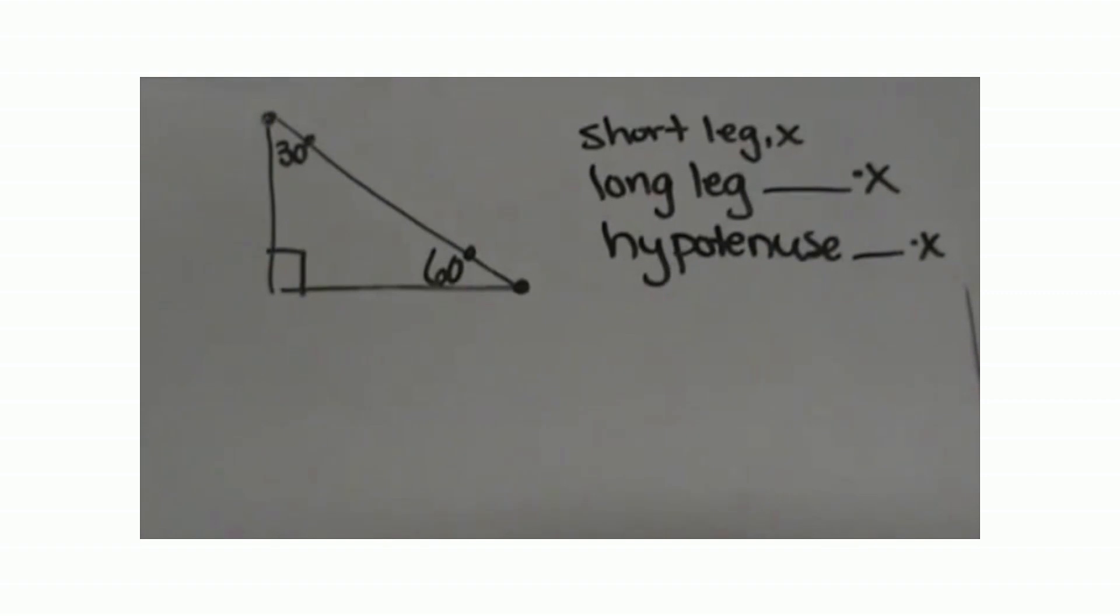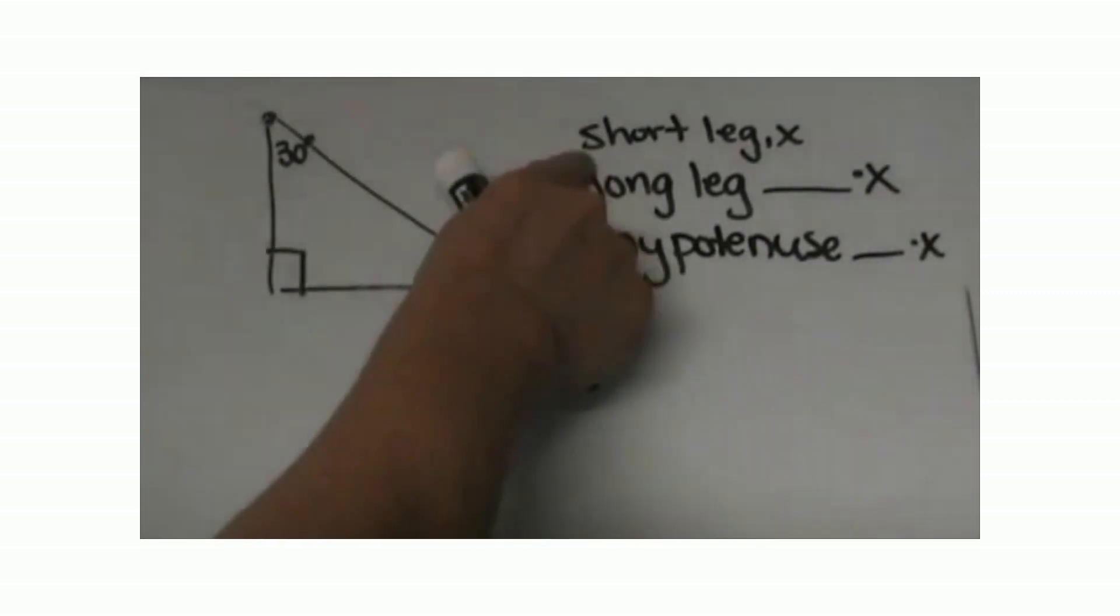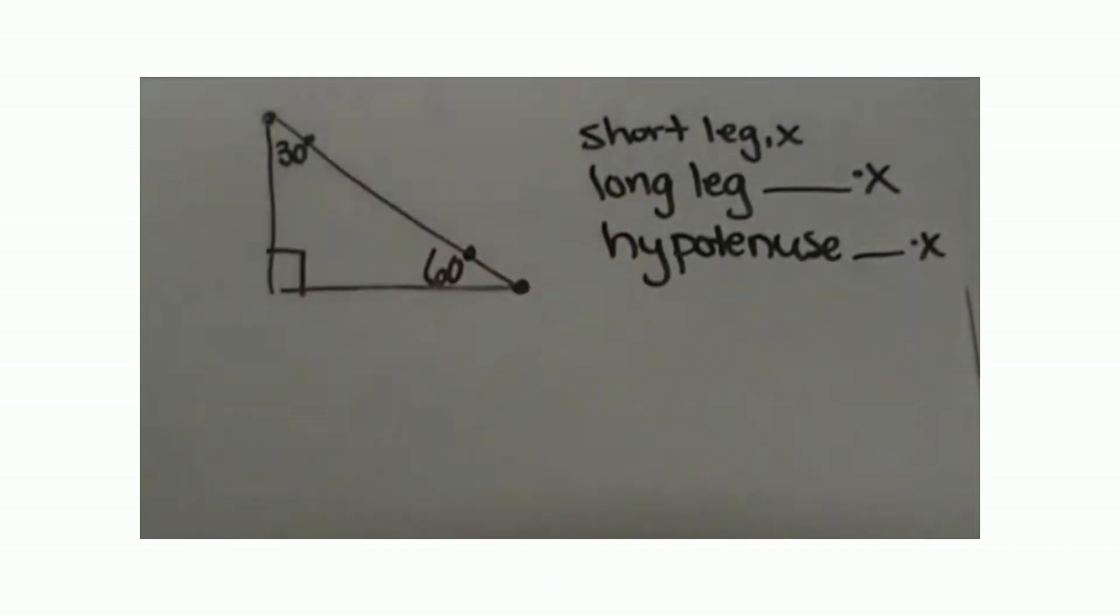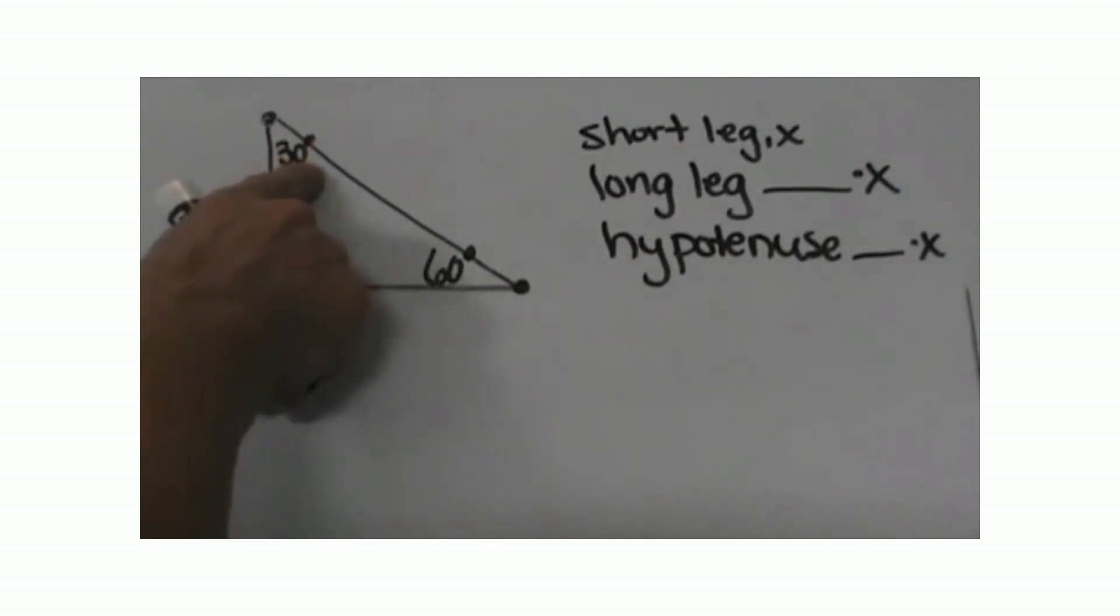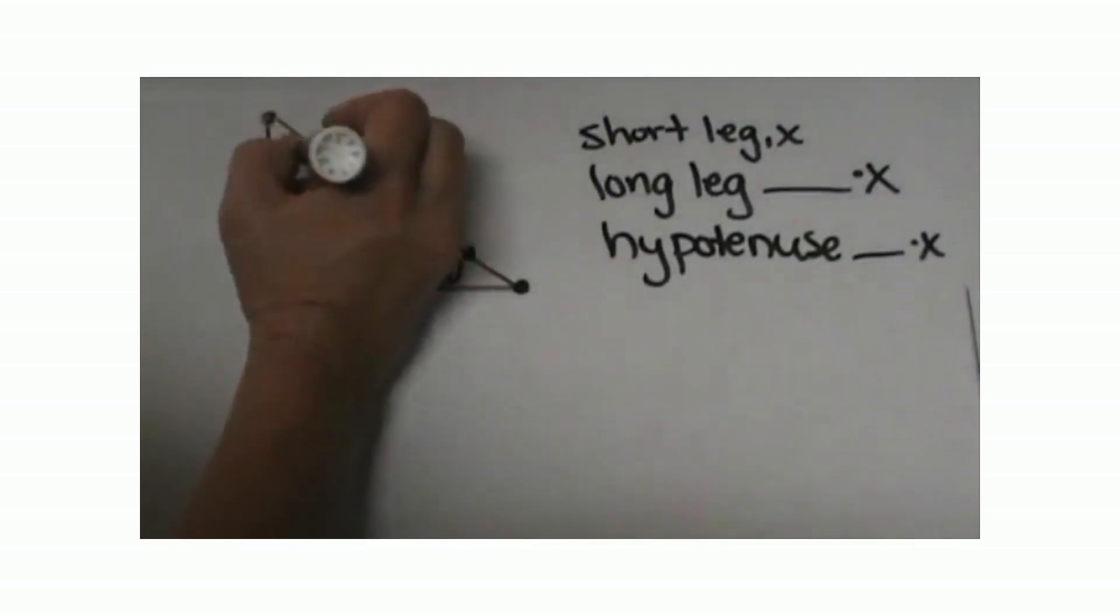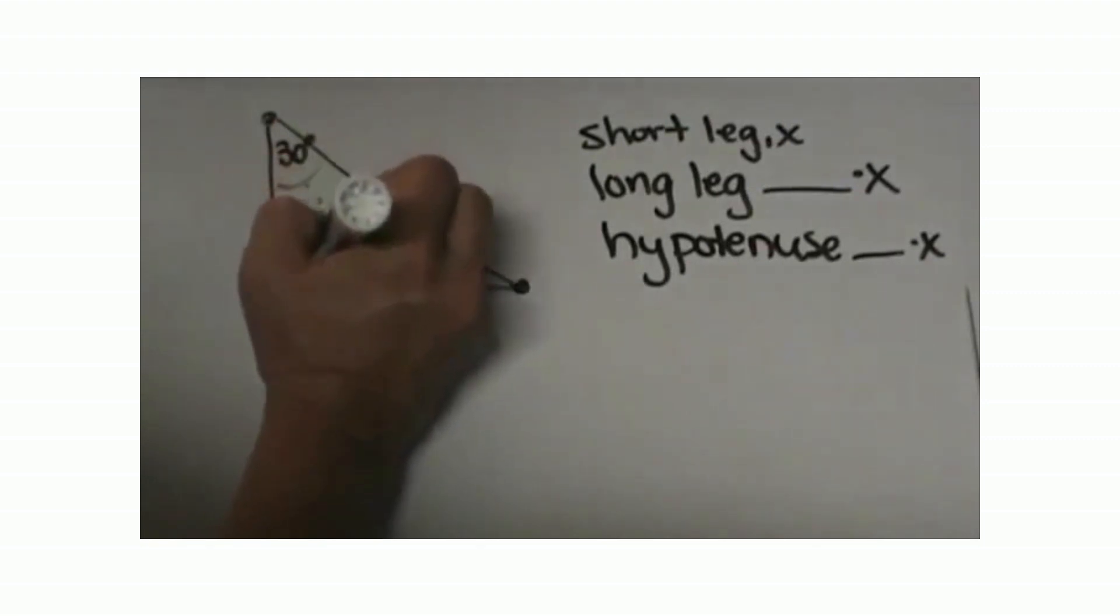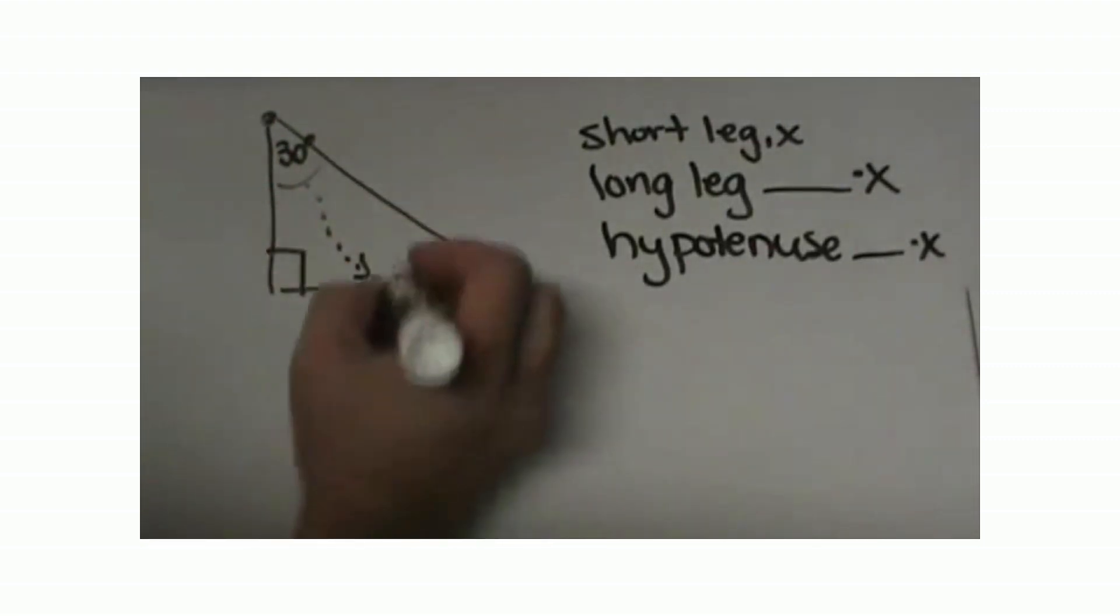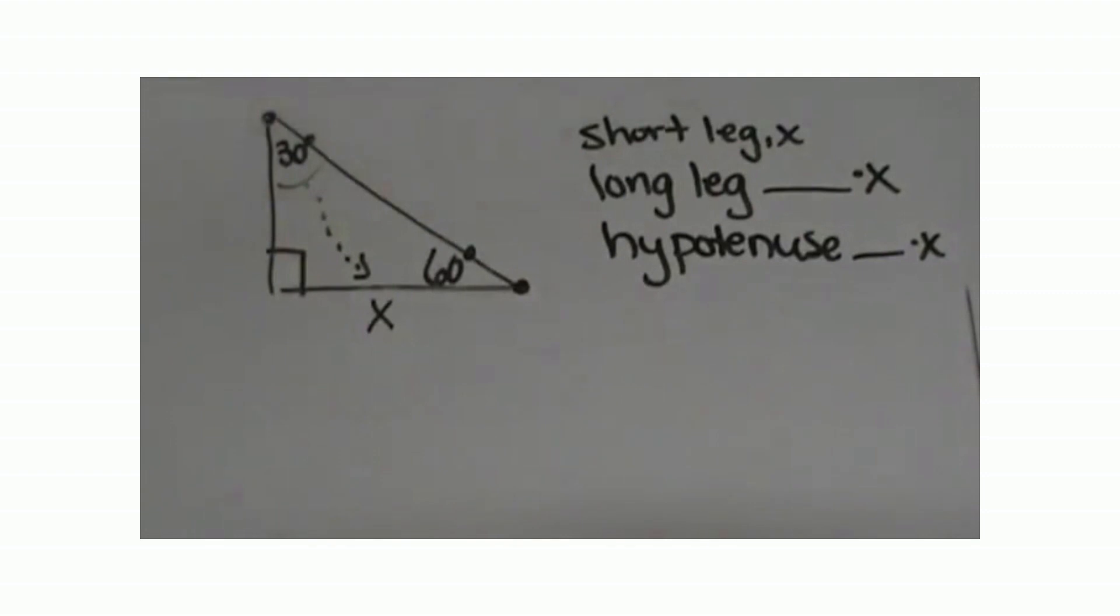Let's start with this first one. We are going to label the short side x. You have to look at this and it is not drawn to scale. You have to look at it and decide what is your short leg. You go to the smallest angle, which is 30 degrees, and the side opposite that would be your short leg. This would be x.